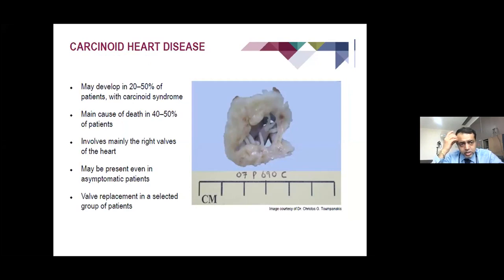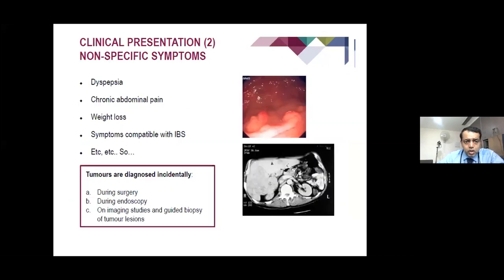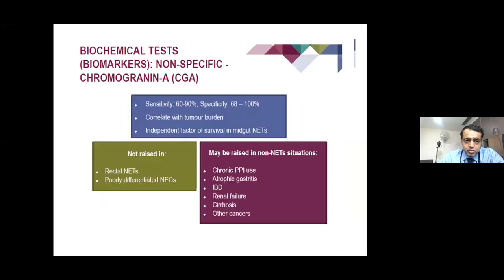Carcinoid heart disease can involve the right side of the heart, causing right-sided heart failure, tricuspid regurgitation, and pulmonary stenosis. Patients can have very high anti-proBNP levels. Sometimes the clinical presentation may only be dyspepsia, chronic abdominal pain, weight loss, or altered bowel habits, and some tumours are incidentally diagnosed on surgery or endoscopy — not necessarily specific symptoms.